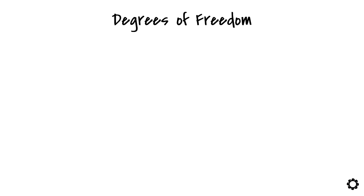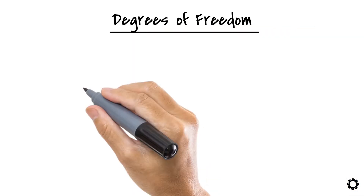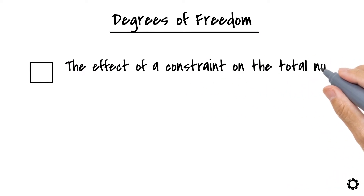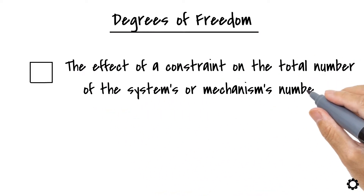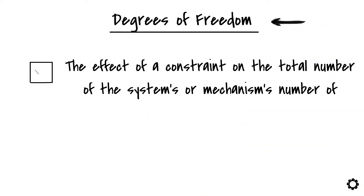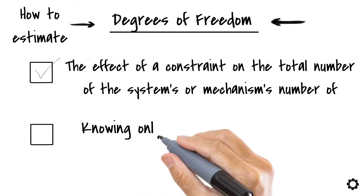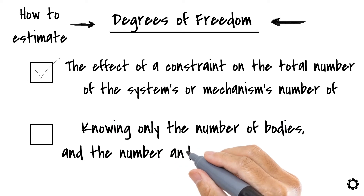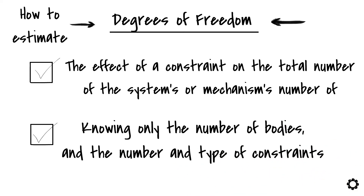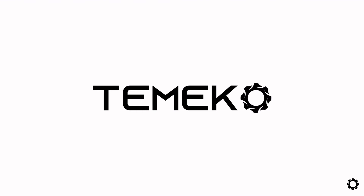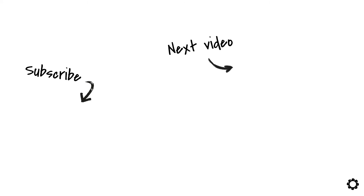In this lesson, we reviewed the concept of a degree of freedom and the effect of a constraint on the total number of the system's or mechanism's degrees of freedom. We also saw how to estimate the number of degrees of freedom knowing only the number of bodies and the number and type of constraints. Thanks for watching and have a nice day. We'll see you next time.